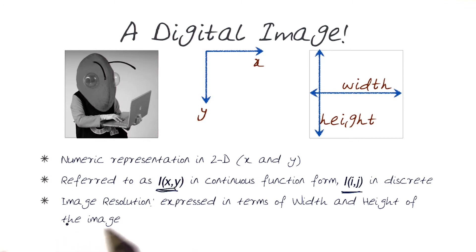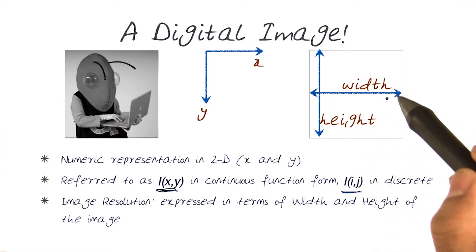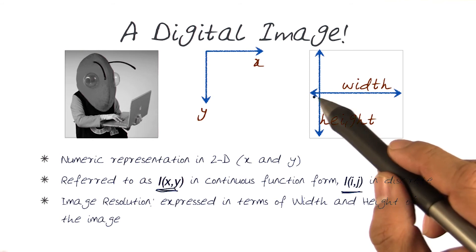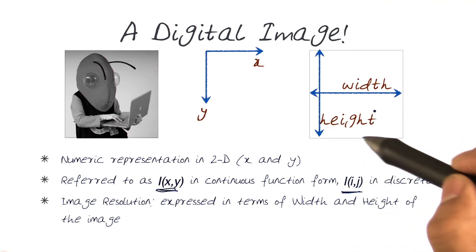And of course, one more thing to add here is the resolution of the image, which is represented in terms of width and height as I showed in the last slide. Basically, the scope of this image is defined by the width (the number of columns) and the height (the number of rows) of this image.